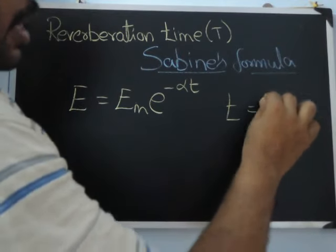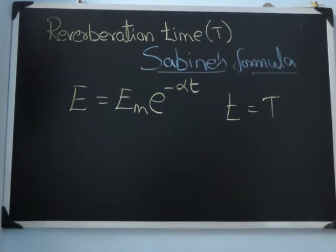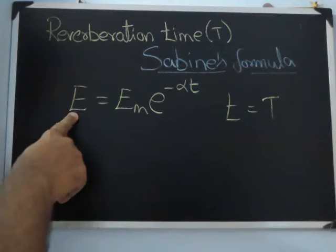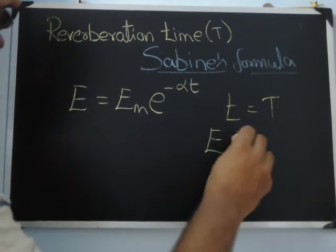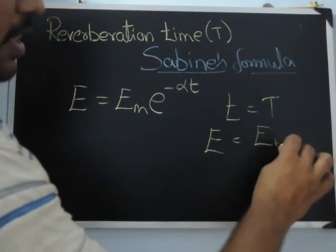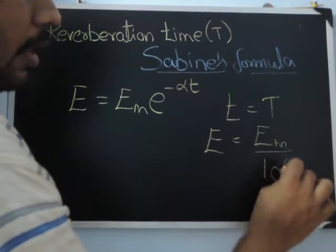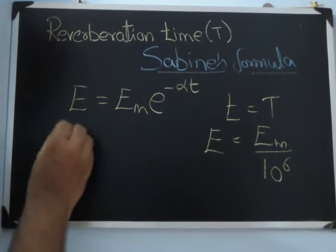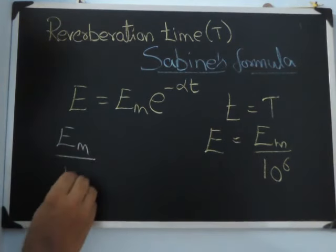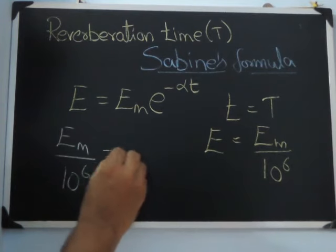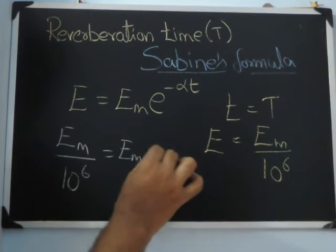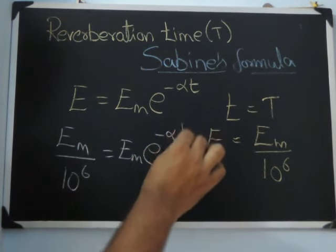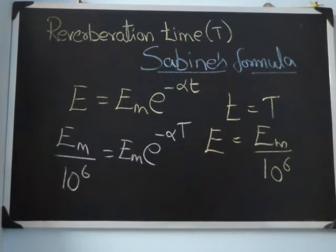When t equals T, the reverberation time, energy would have reached a value of one millionth of the maximum energy. Substituting this into this equation, we have Em by 10 to the power 6 equals Em into e power minus alpha capital T.